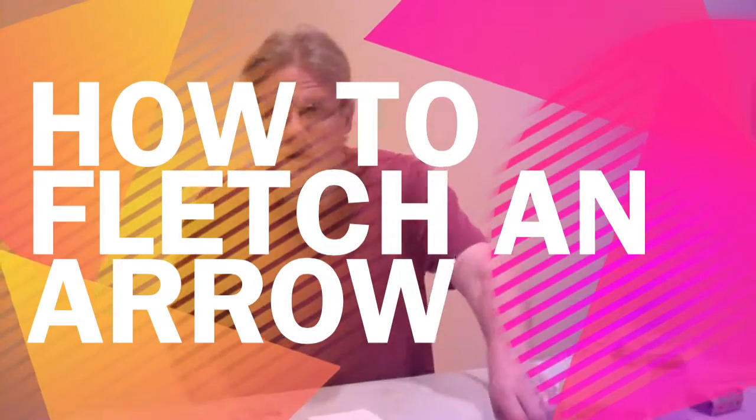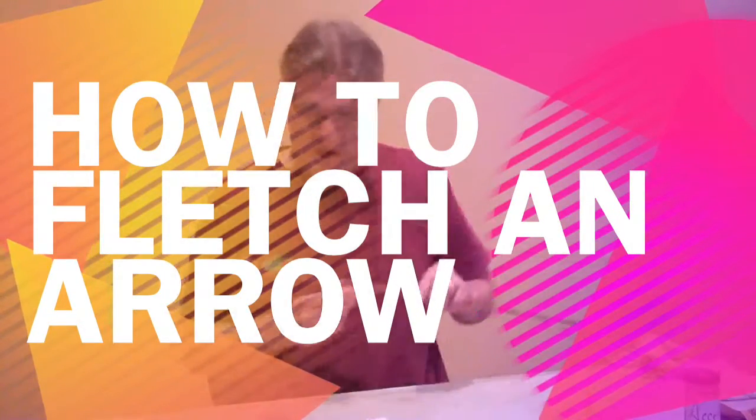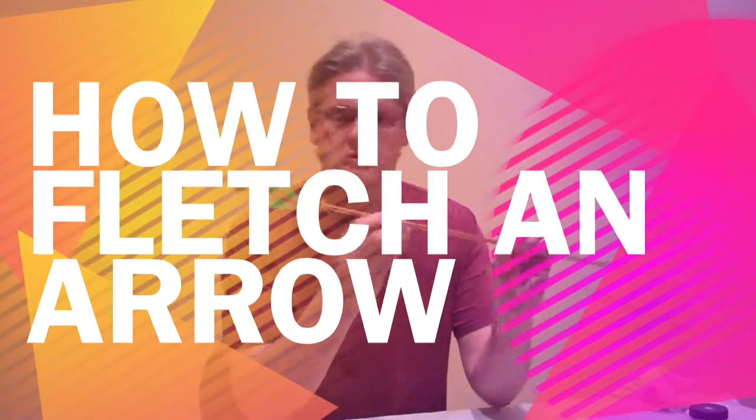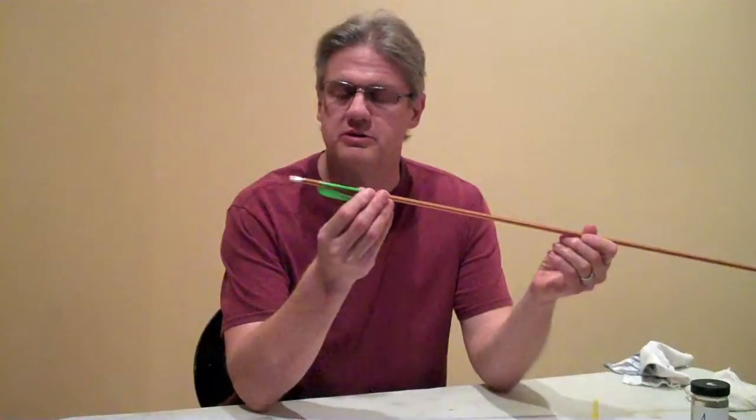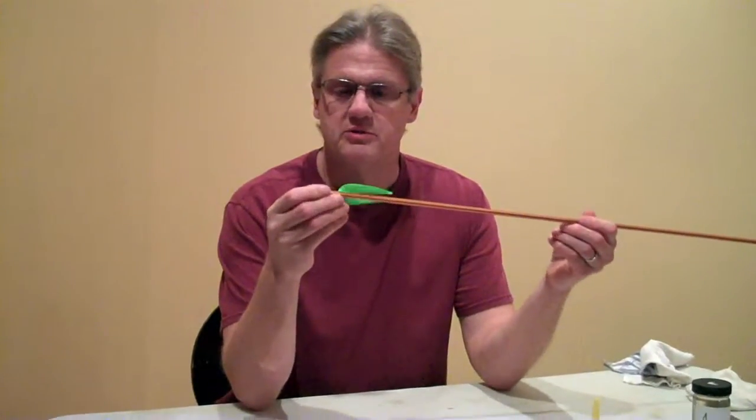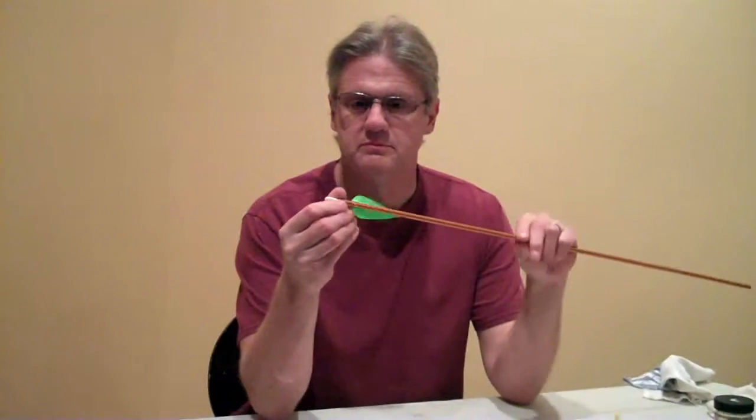We're going to teach how to fletch an arrow tonight. First off, the arrow is a standard Easton arrow that the Girl Scouts all use. You can see that this one is pretty well ragged.